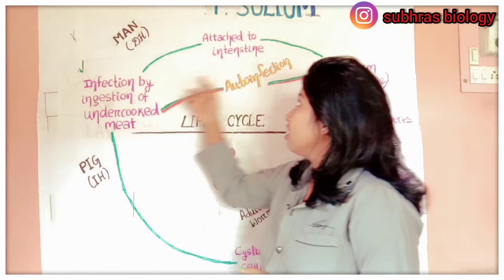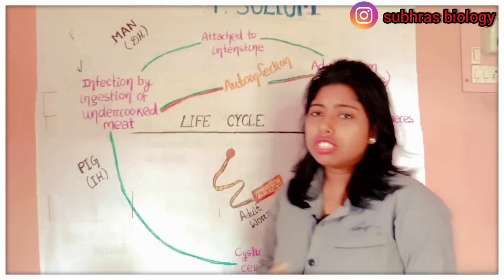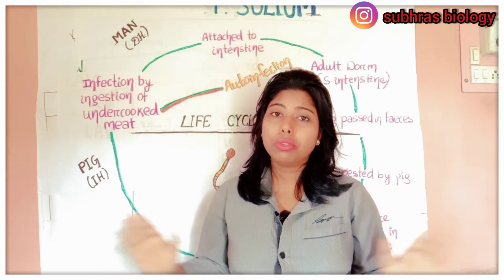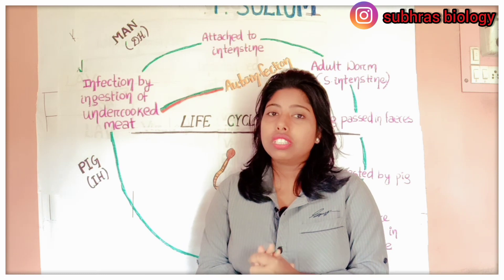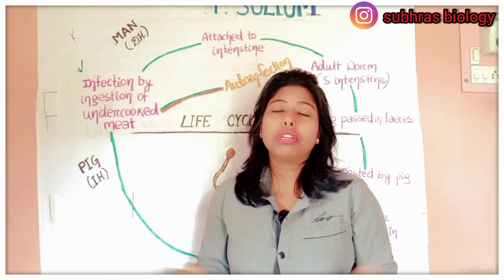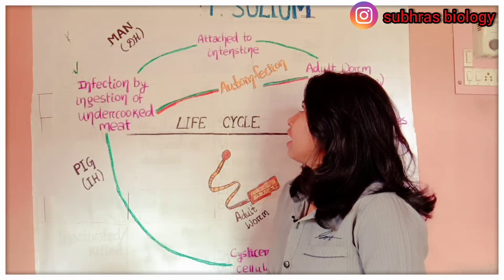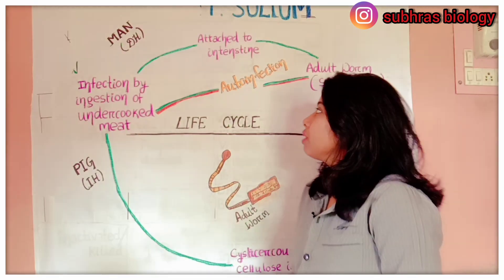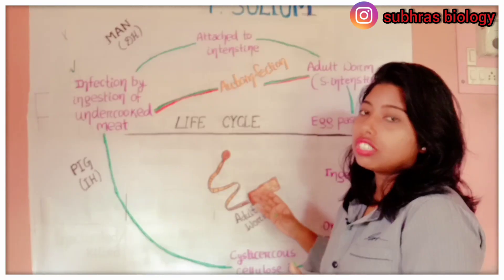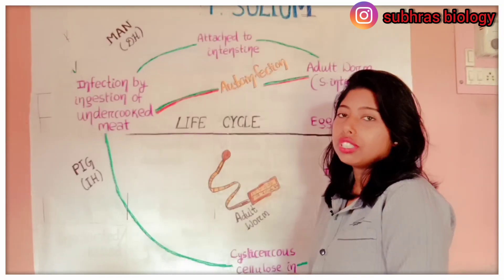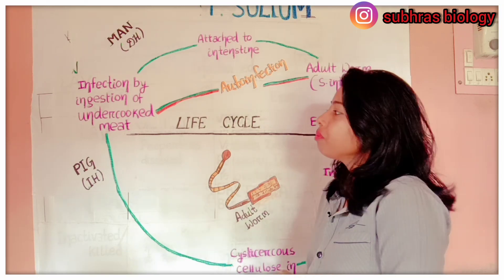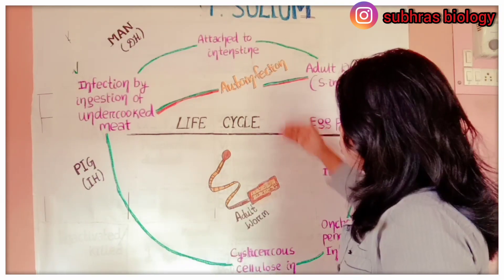I have drawn a cycle of Taenia solium — in just four to five steps you will be able to remember the entire life cycle of Taenia solium. Watch till the end so that everything will be clear. I have drawn a schematic diagram — a cycle — so that it will be easy to understand. The life cycle includes only three to four steps, and I have divided it into two parts.